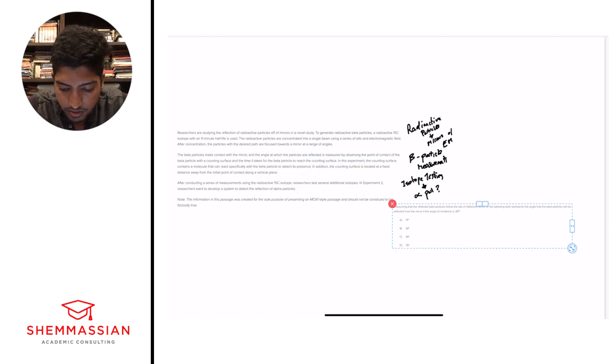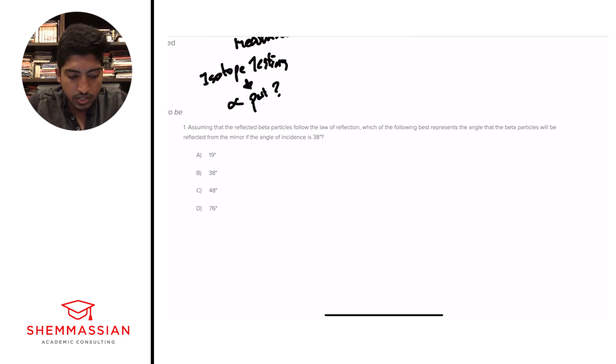Alright, question number one. Assuming that the reflected beta particles follow the law of reflection, which of the following best represents the angle that the beta particles will be reflected from the mirror if the angle of incidence is 38 degrees? Alright, so a lot of key terms that you need to focus in on right here. One of them is that we're looking at reflected beta particles following the law of reflection.